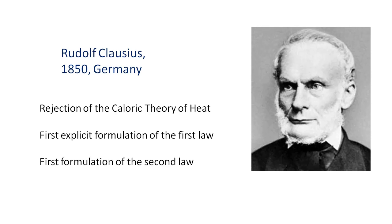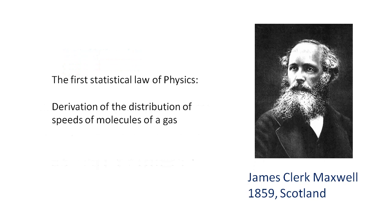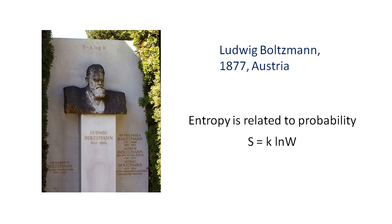In 1859, Scottish physicist James Clerk Maxwell derived from the mechanics of individual molecular collisions the expected distribution of molecular speeds in a gas. This was the first statistical law of physics. Austrian physicist Ludwig Boltzmann built on this idea of the statistical distribution of properties of molecules, and in 1877 he published the famous equation S = k ln W, which expresses the relation between entropy and probability. He is the one who really laid the foundations of statistical thermodynamics.